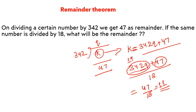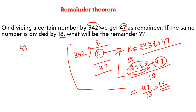47 divided by 18 gives remainder 11. There's a useful shortcut here: whenever this type of question appears, you don't need to go through all those steps. Just directly divide the original remainder by the new divisor — because the main term (342Q here) is always divisible by the new divisor. So just divide 47 by 18, and the answer is remainder 11.